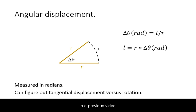In a previous video, we have derived the relationship between angular displacement and arc length. The relationship is through the radius as long as the angular displacement is measured in radians.